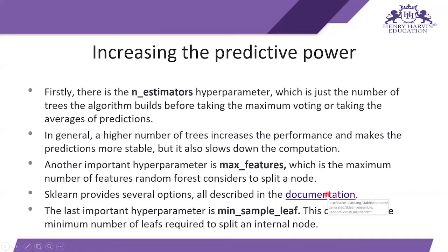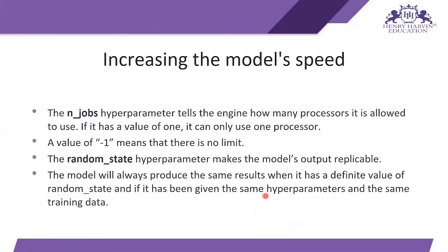The last important hyperparameter for predictive power is min_samples_leaf, which determines the minimum number of leaf nodes required to split an internal node — that is, how many terminal nodes you want in your trees. By specifying this argument you get that number of leaf nodes in your decision tree model for the n number of estimators.